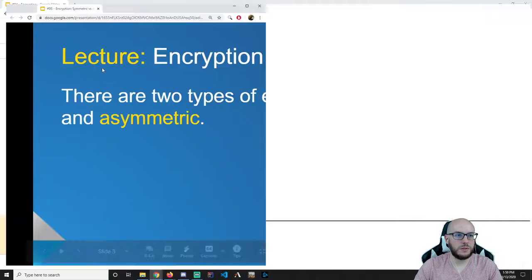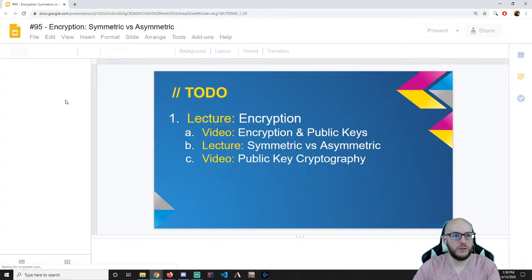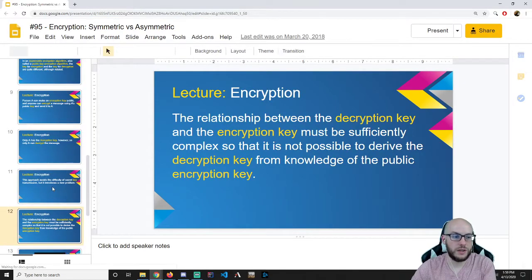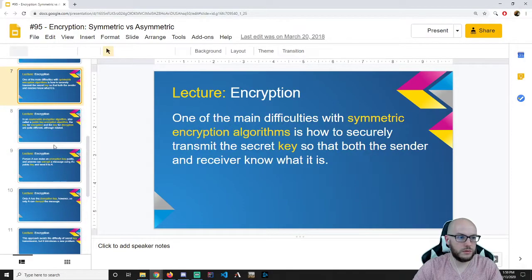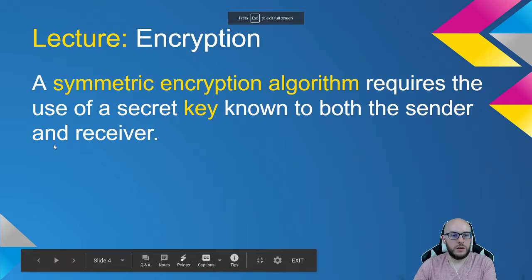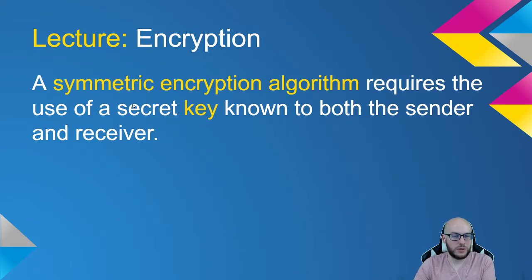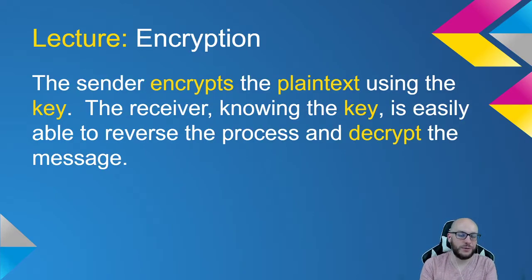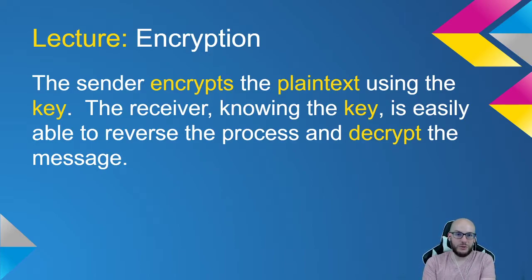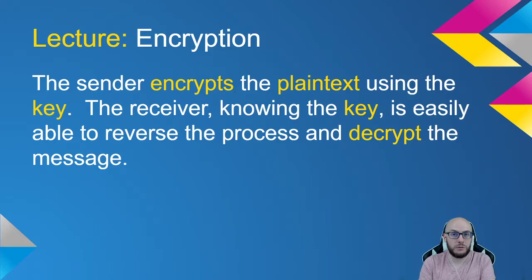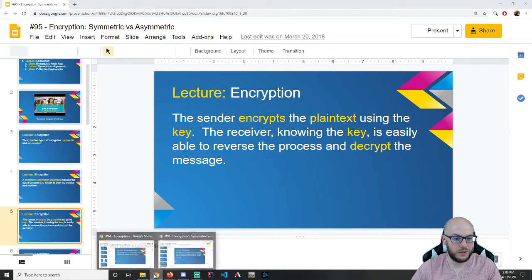So there are two types of encryption: symmetric and asymmetric. We learned three encryption algorithms — Caesar cipher, random substitution, and the Vigenère cipher — and all three of those are symmetric. With symmetric encryption, it requires the use of a secret key known to both the sender and receiver, so the key used to encrypt is the same used to decrypt. In the case of Caesar cipher, we're talking about a shift of three — you apply a negative shift to undo that action. In the case of the Vigenère cipher, once you have the key, you can run it back and figure out what the encrypted text was.